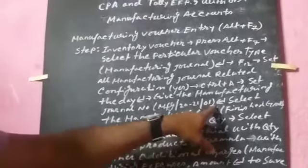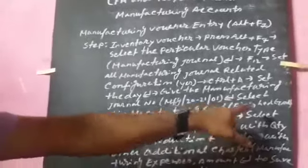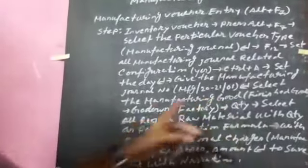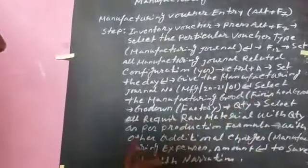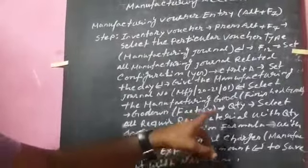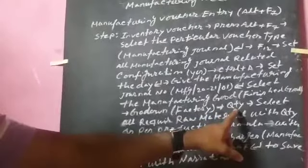Select the manufacturing goods, then press enter and keep the quantity.